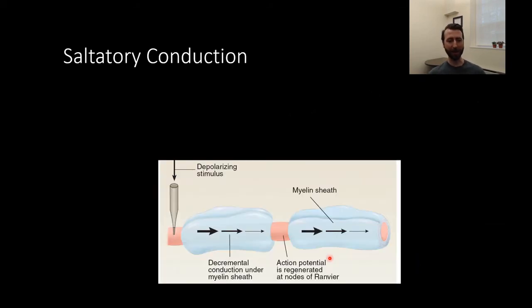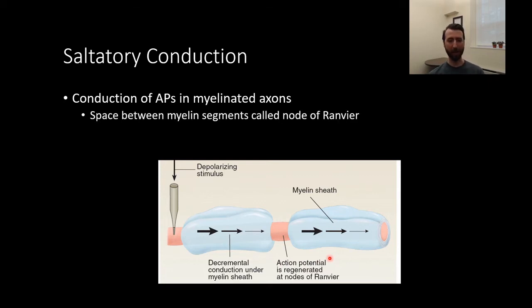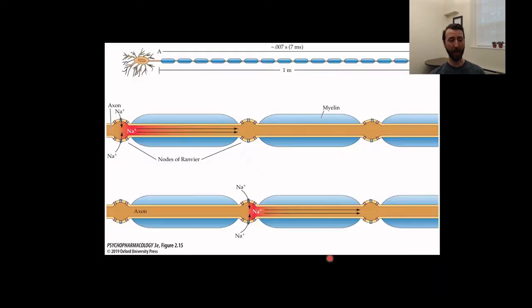Let's bring this little piece to the puzzle. We've talked about myelin a couple of times and how it speeds up conduction. Let's talk about exactly how that works. It works through a process called saltatory conduction. Because the change in polarity seems to sort of jump from place to place. Saltatory has the same root as jump. So jumping conduction. Conduction of action potentials that can happen in myelinated axons. The space between myelin segments is called the nodes of Ranvier. The AP jumps from one node of Ranvier to the next. And the sodium current is only possible at these nodes.